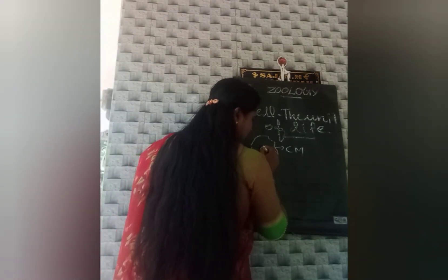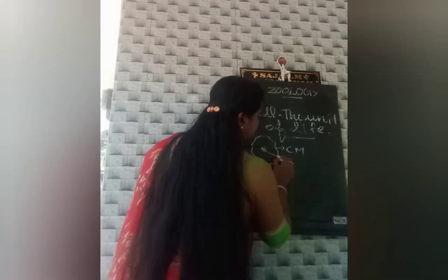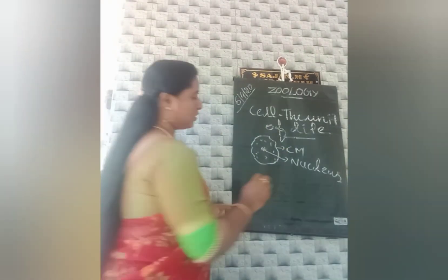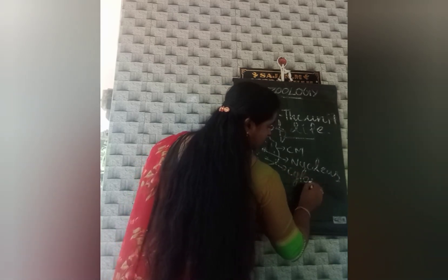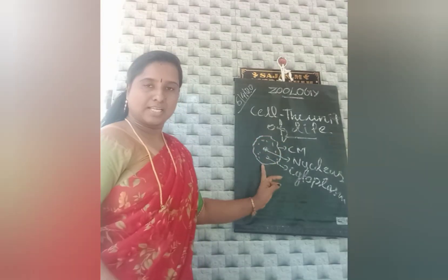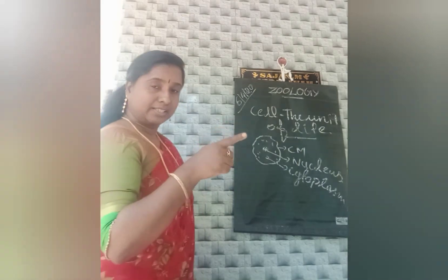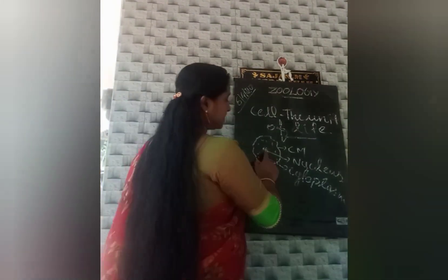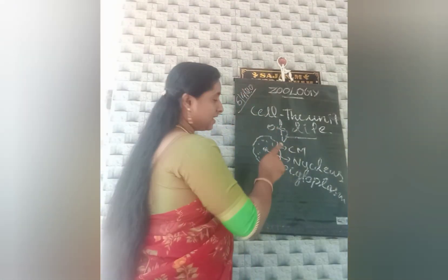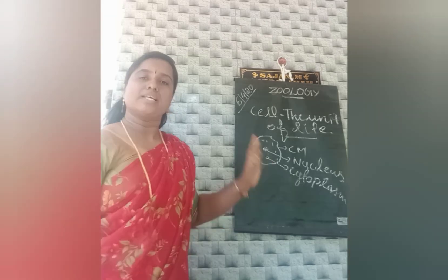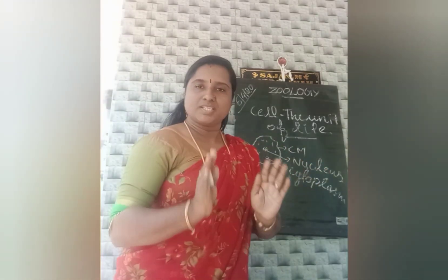The centrally placed spherical structure is known as the nucleus. And the jelly-like substance present inside the cell is known as cytoplasm. So a simple cell has three main parts: cell membrane, nucleus, and cytoplasm.